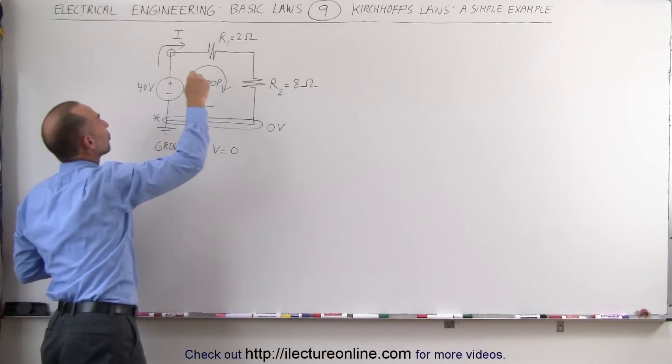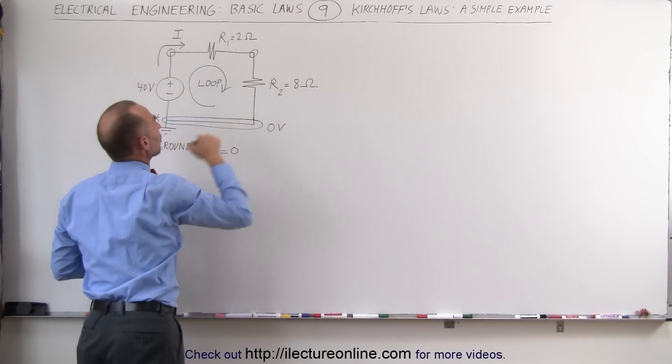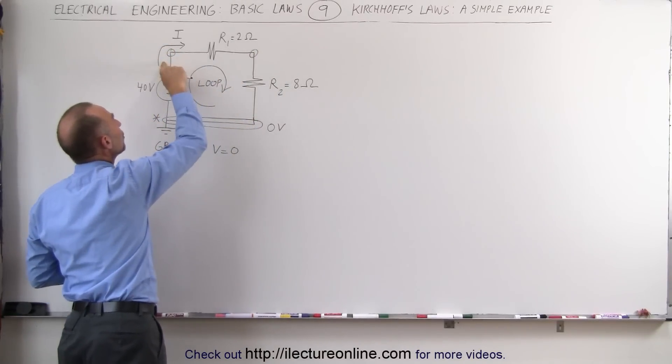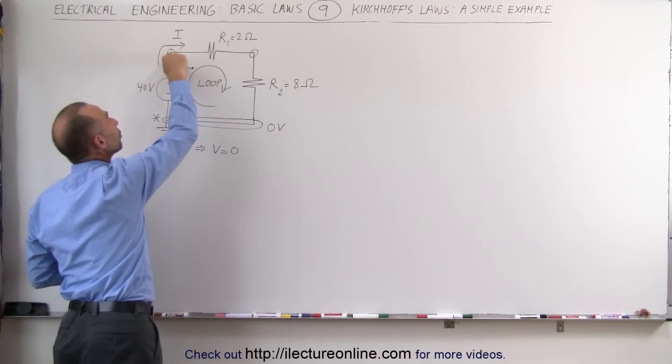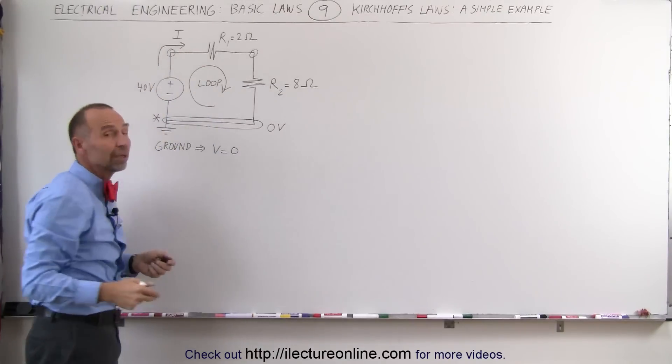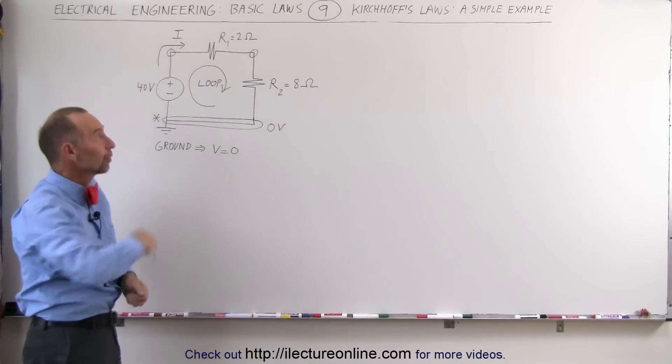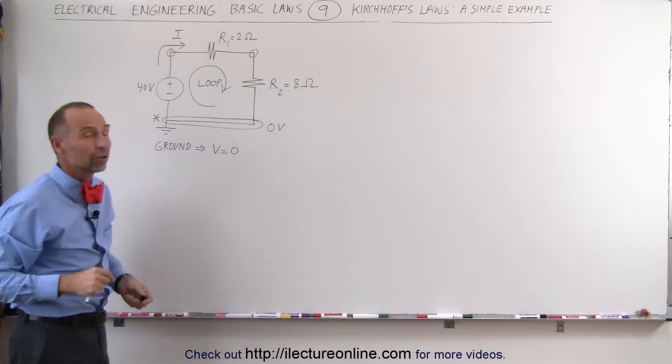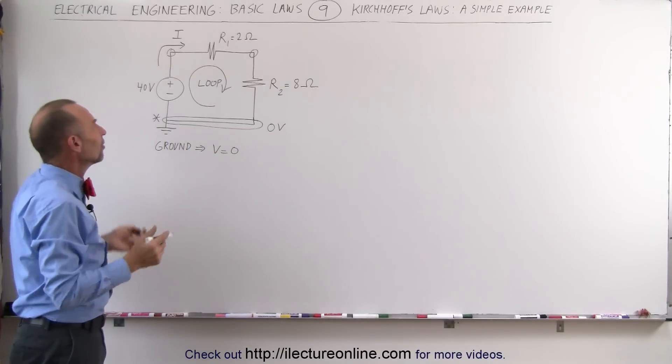There's one node here. Let me put a little circle there. There's another node there. There's another node there. Notice that for any node, the current entering the node must equal the current leaving the node because there's just a single current flowing around the entire circuit, around the entire loop. So that doesn't help us a lot.